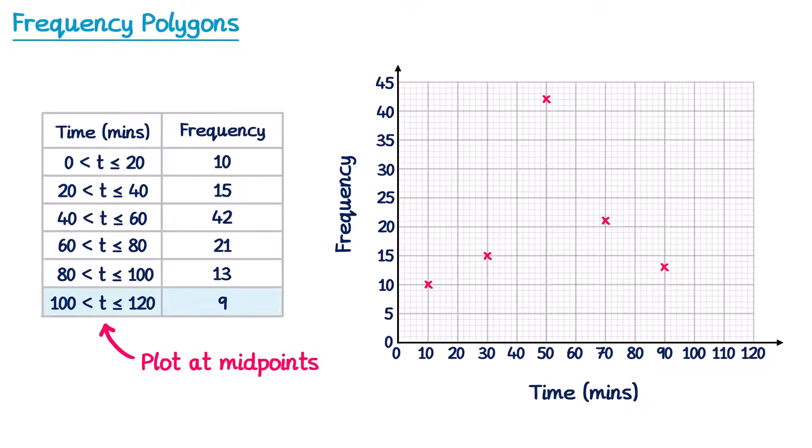And for the final one, from 100 to 120, the midpoint is 110, and the frequency here is just 9. So we plot across at 110, we have 9.